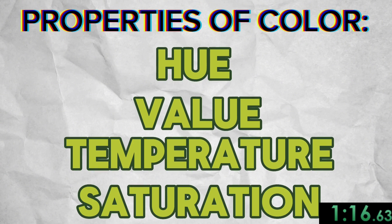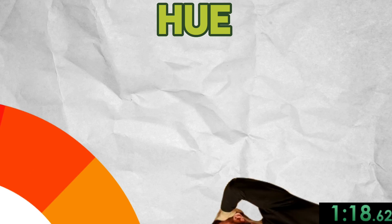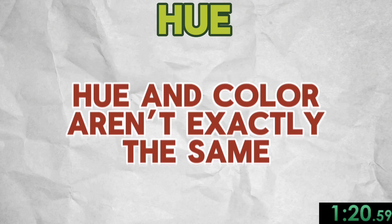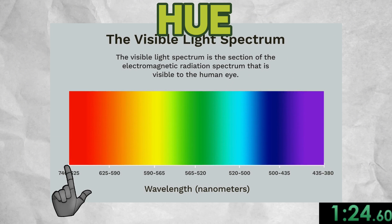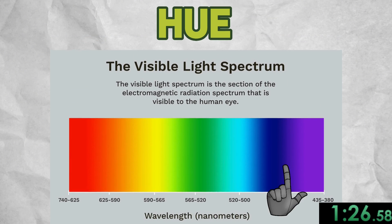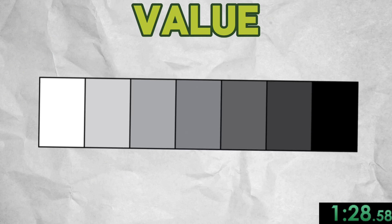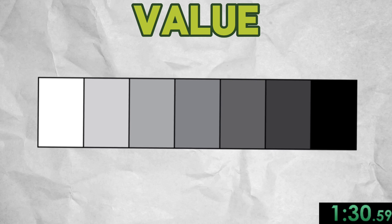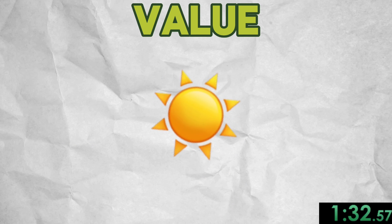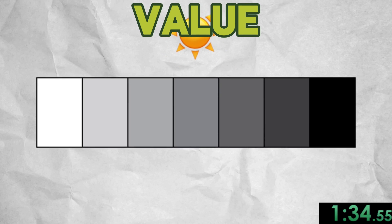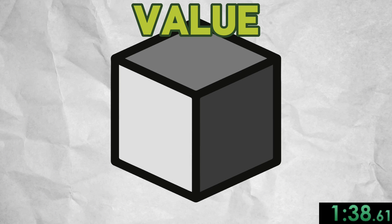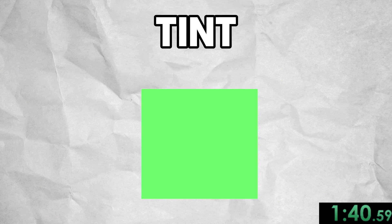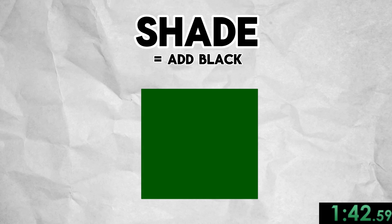Properties of color. There are four properties of color: hue, value, temperature, and saturation. Hue is the attribute of a wavelength of light that a person is able to see. Hue and color are often used synonymously, but hue refers more specifically to the colors of the visual spectrum: red, orange, yellow, green, blue, and violet. Value is the attribute that defines the lightness or darkness of a color in terms of how close it is to white or black. High value means light color. Contrast of value separates objects in space and is key for viewers to perceive an object as three-dimensional. Tint is when you add white to lighten a color. Shade is when you add black to darken a color.